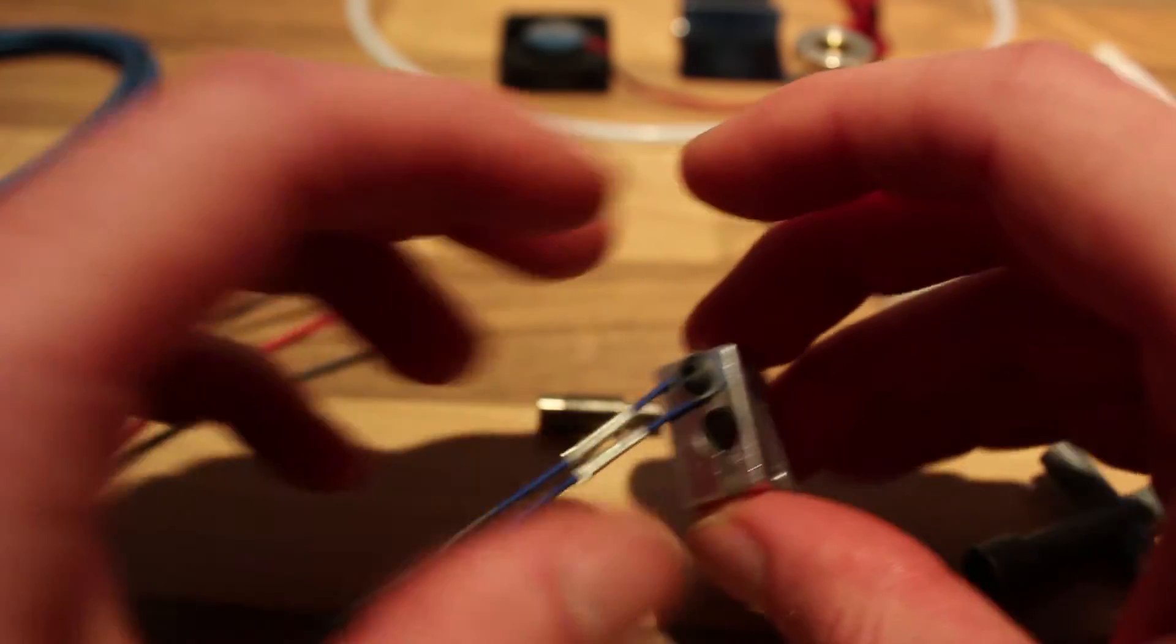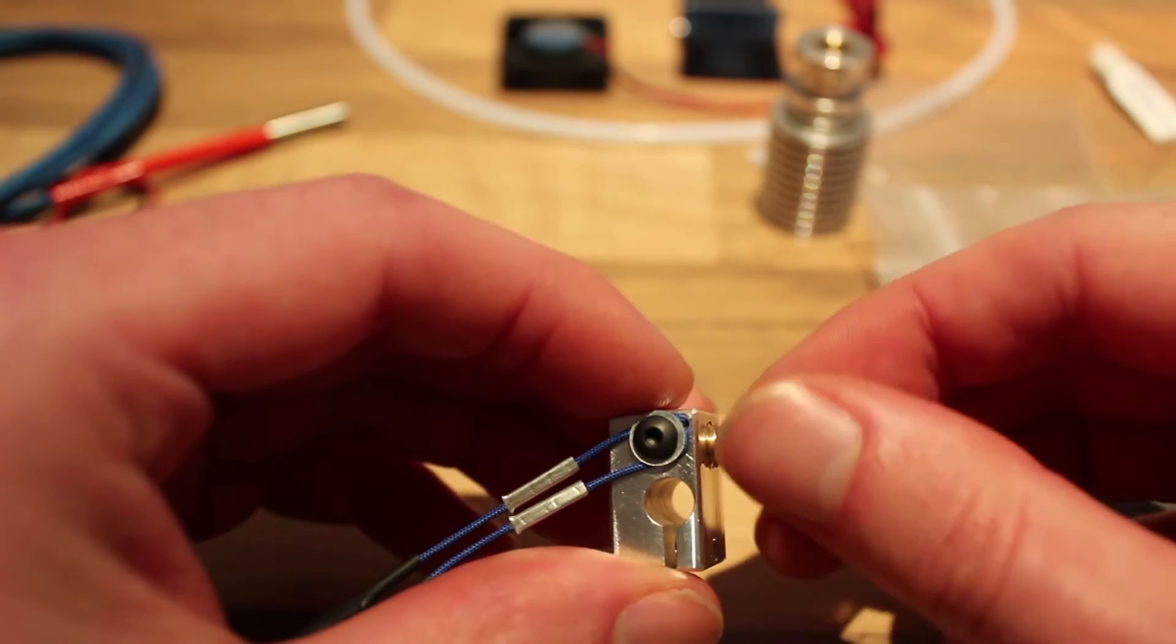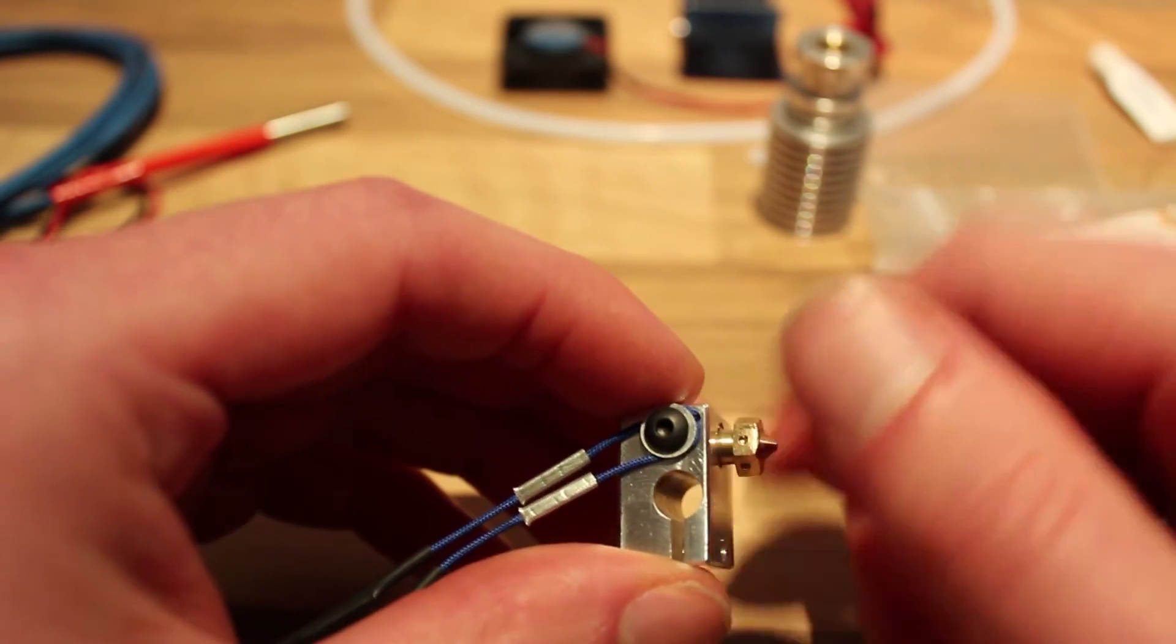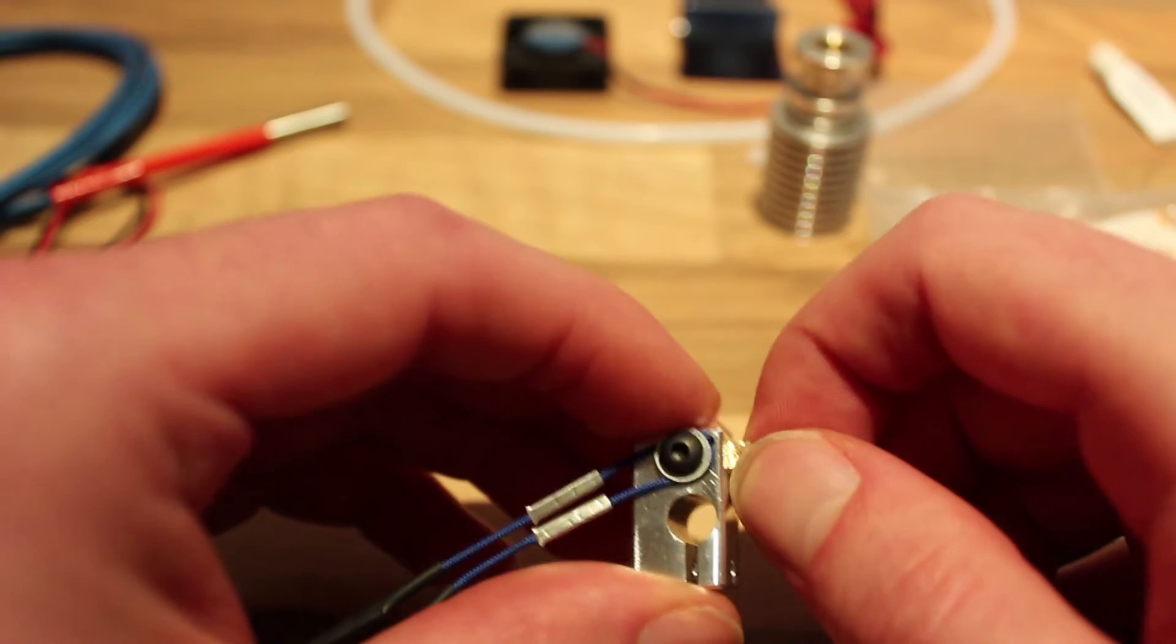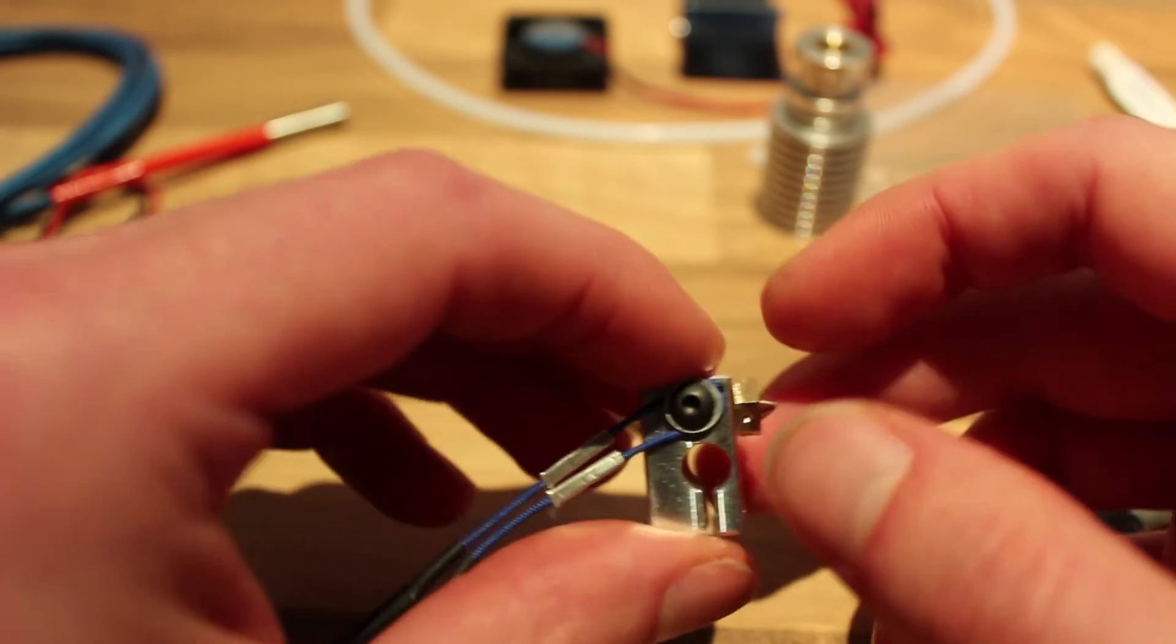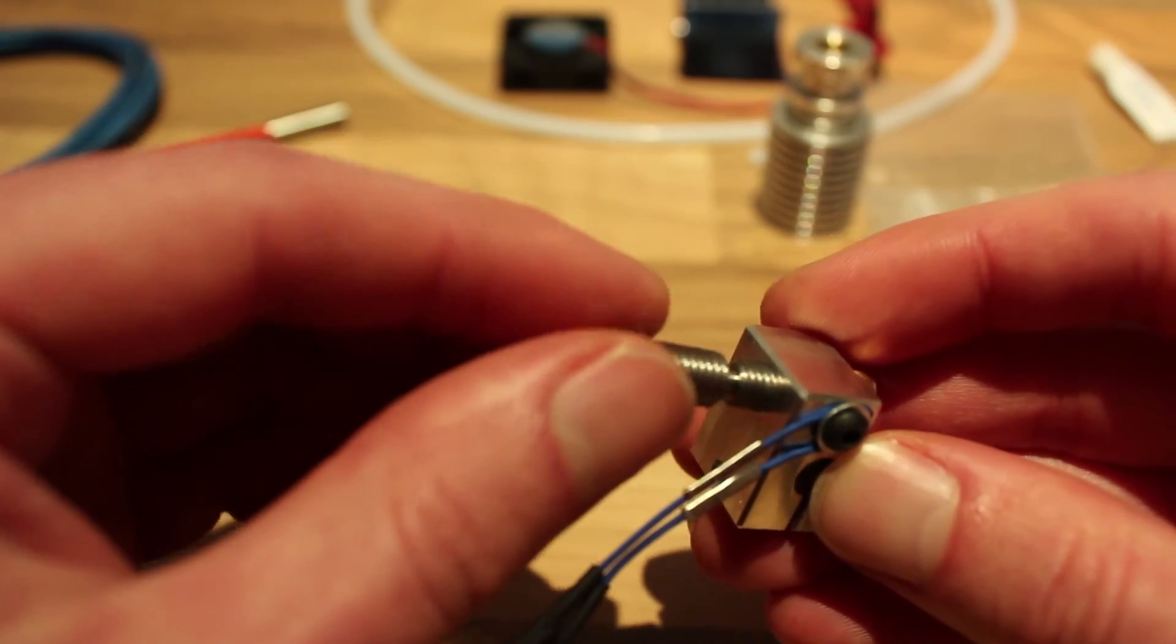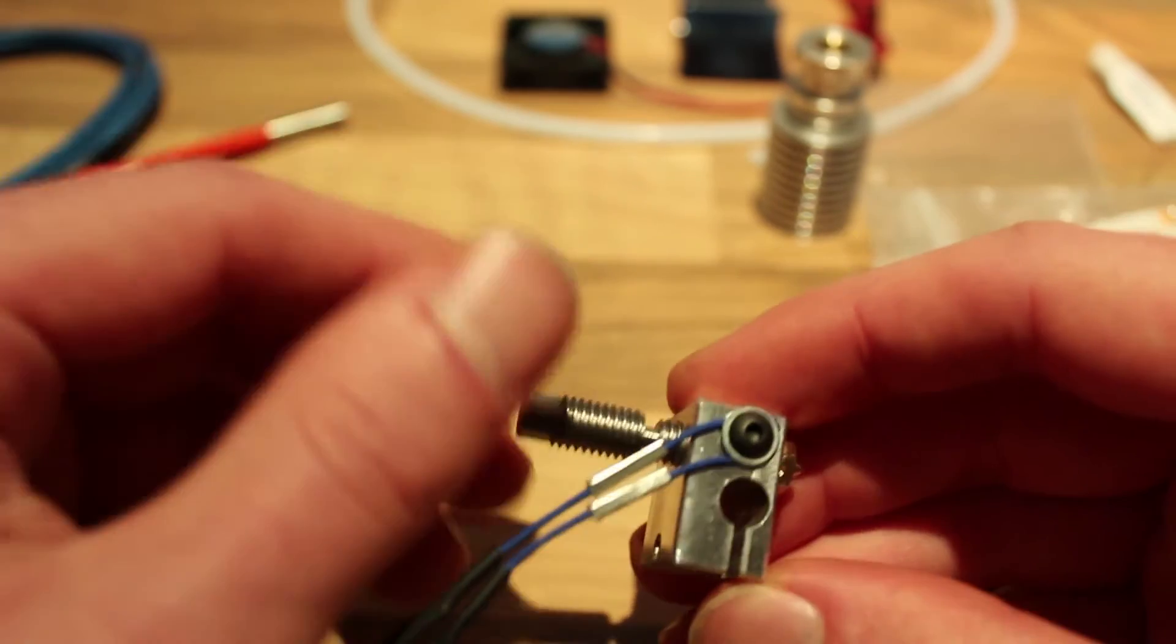Now your thermistor is ready. You can take your nozzle, screw that one in all the way and then a half turn back. Take your heat break, screw it in on the other side.